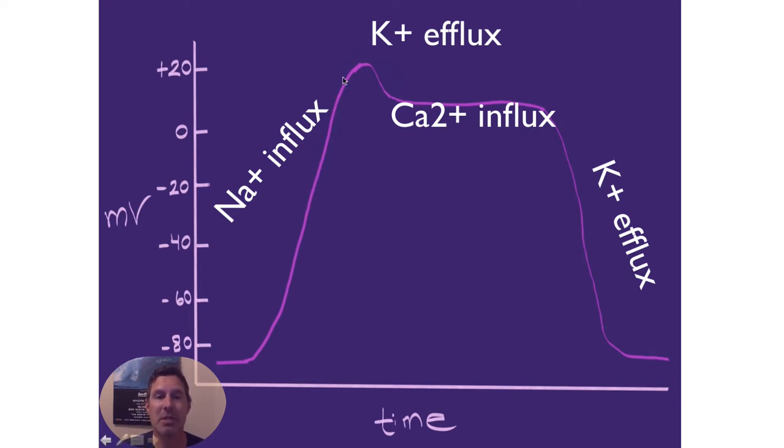Sodium influx, potassium efflux, calcium influx to cause the plateau phase of the MCC. And the plateau phase is critical. And then we get the resumption of potassium efflux to fully repolarize the cell.